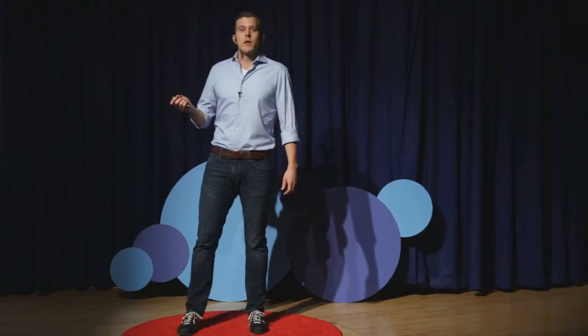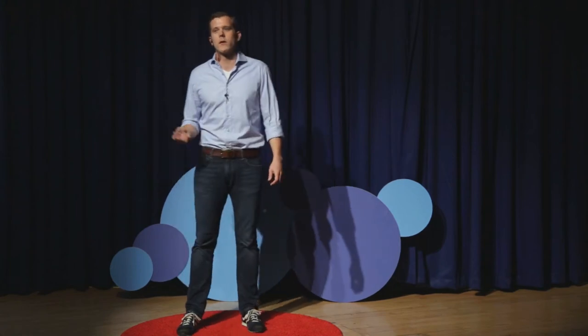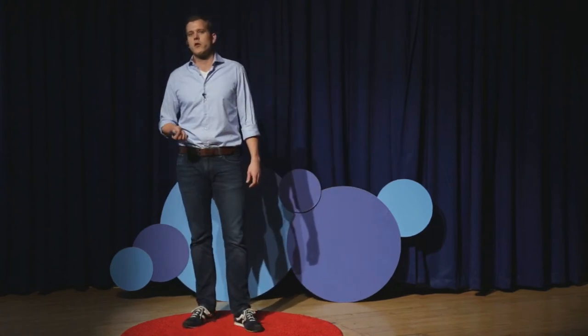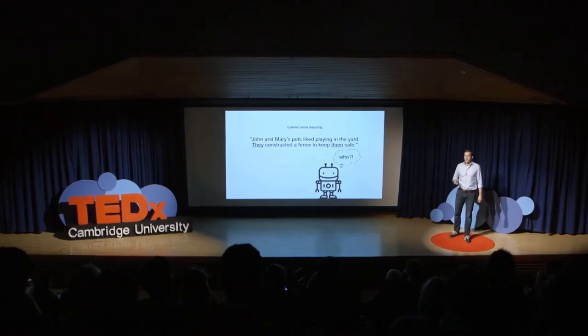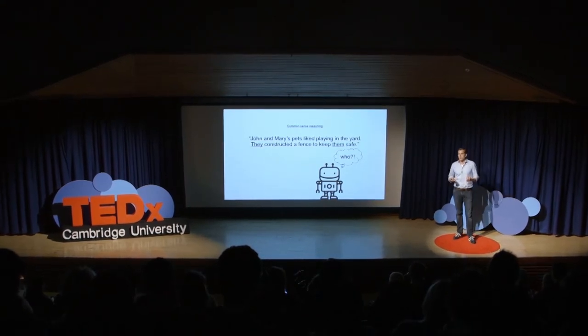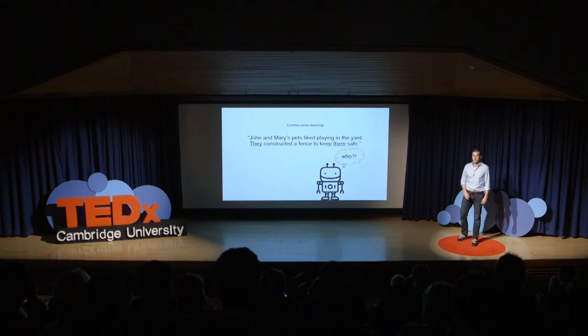If I give this to a machine, it's much harder. If I grammatically analyze this sentence, there's actually no way of knowing what 'they' or 'them' refers to. The way humans do this is by looking at the meaning of words — the meaning of 'fence', for example. Another way of saying this is that humans are very good at common sense reasoning, and this is something that machines really struggle with.